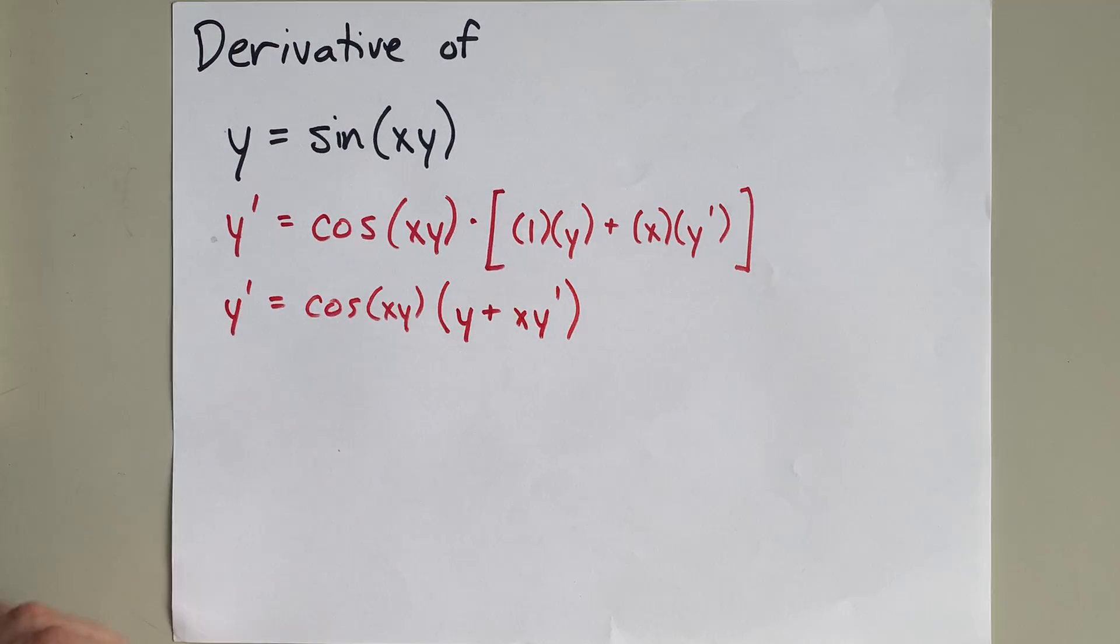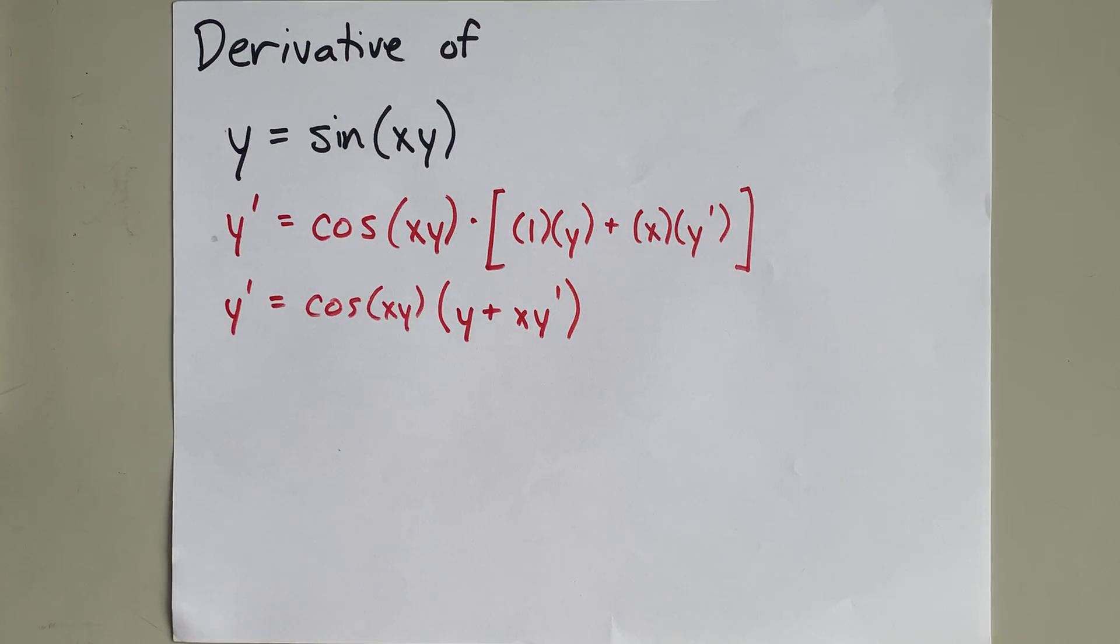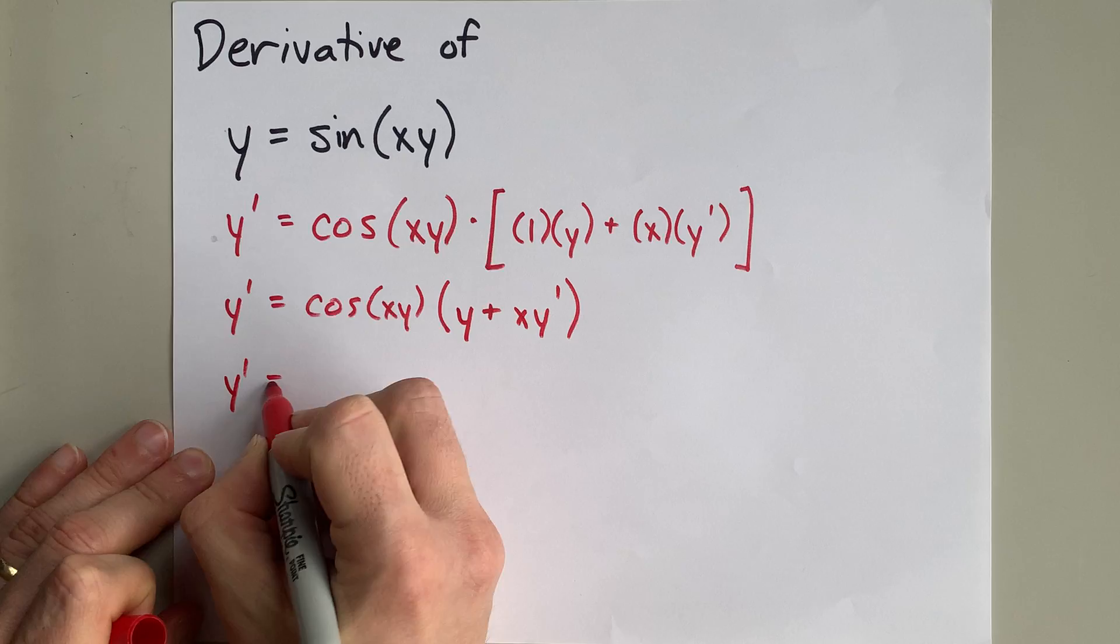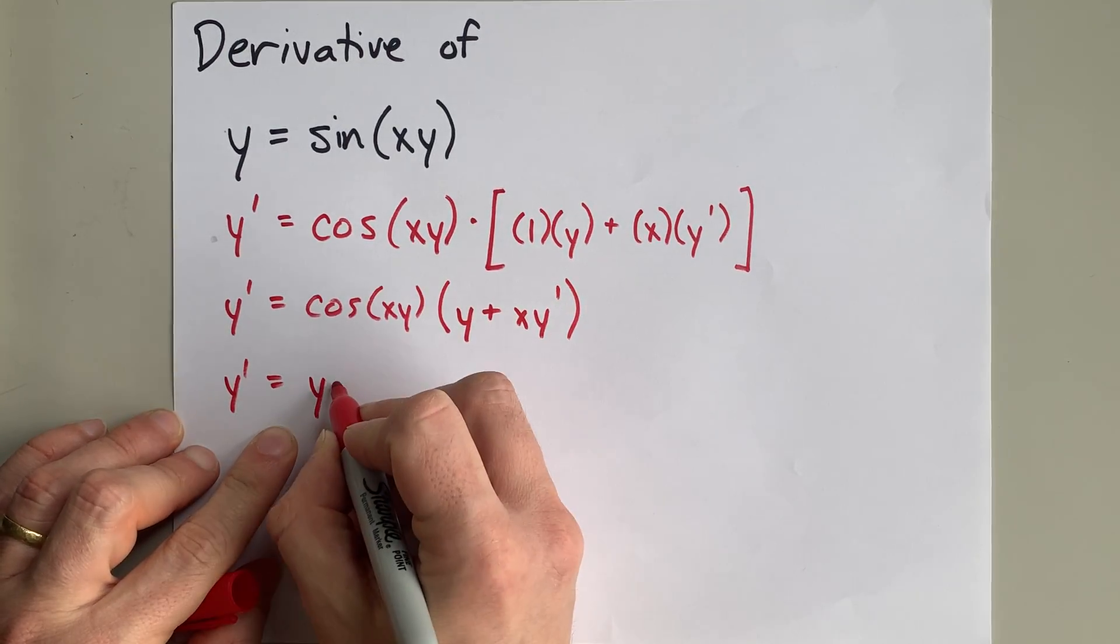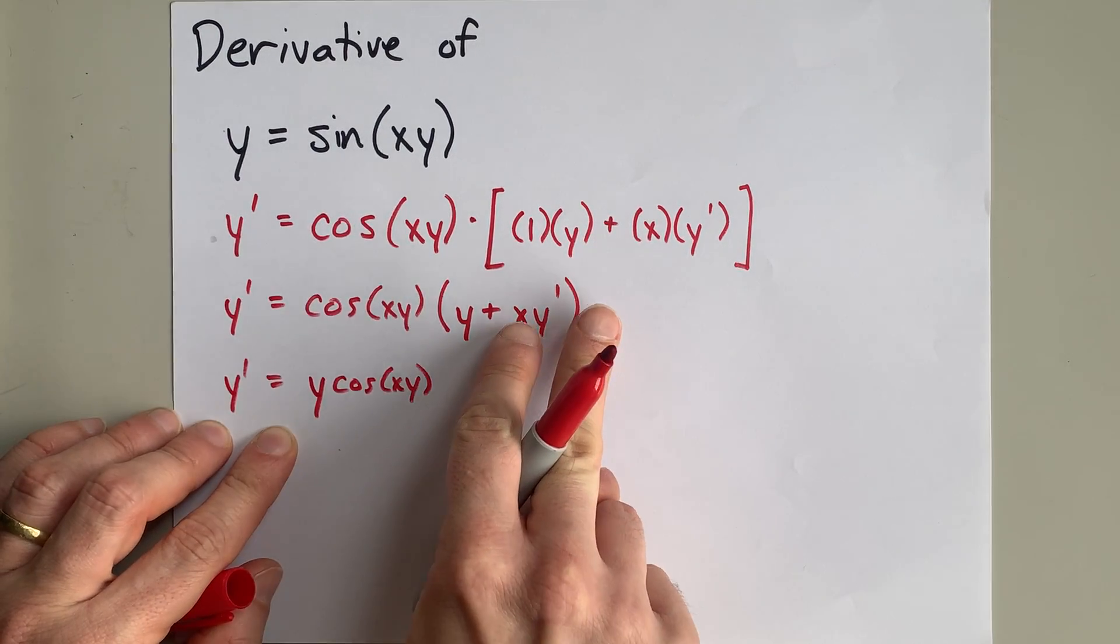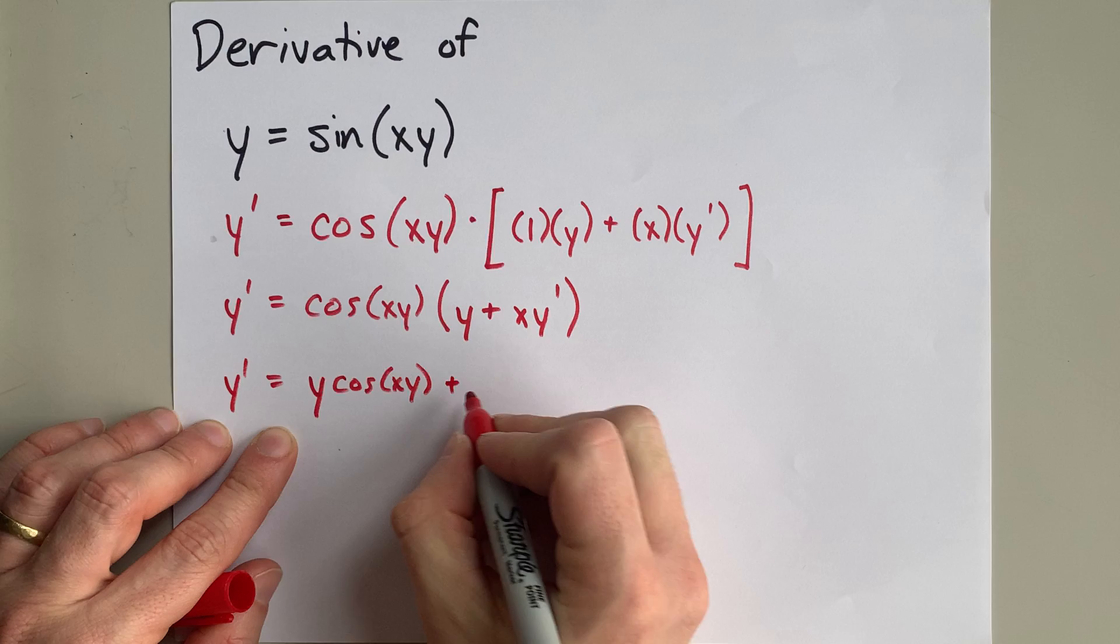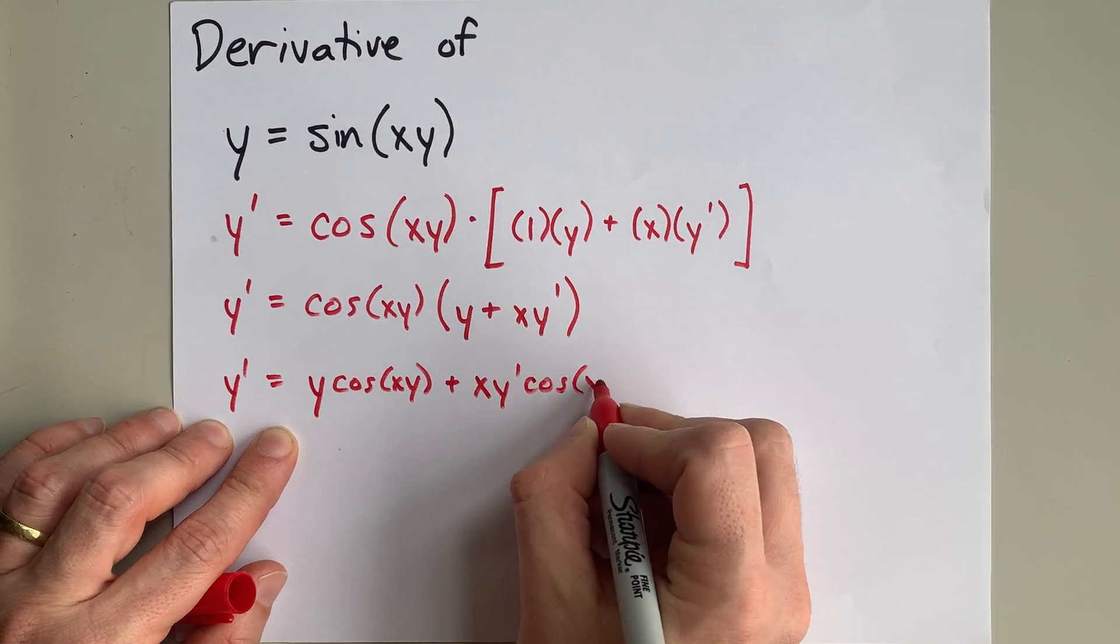But to get at that y prime, I'm actually going to multiply cos(xy) through both of those terms. y prime equals—this cos(xy) times another y is y·cos(xy). And multiplying this by cos(xy) gives me, unsurprisingly, xy prime·cos(xy).